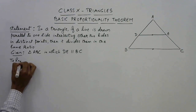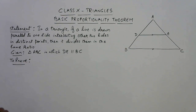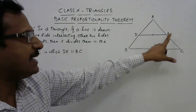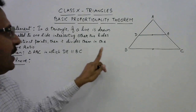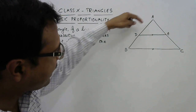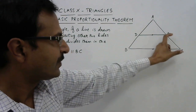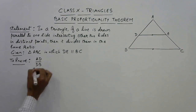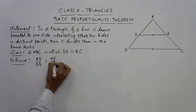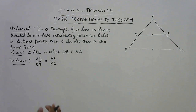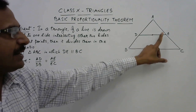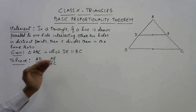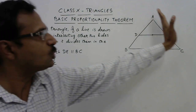Now, what we need to prove — we need to understand the remaining statement. From here the proof starts. It means the line DE divides them — that is AB and AC — in the same ratio. So DE is dividing AB in two parts and AC also in two parts. The ratio of the two parts of AB, that is AD and DB, and the ratio of the two parts of AC, that is AE and EC — these two ratios are to be proved equal. So in a triangle, if DE is parallel to BC and it intersects AB at D and AC at E, then you have to prove that this parallel line divides the other two sides in the same ratio.